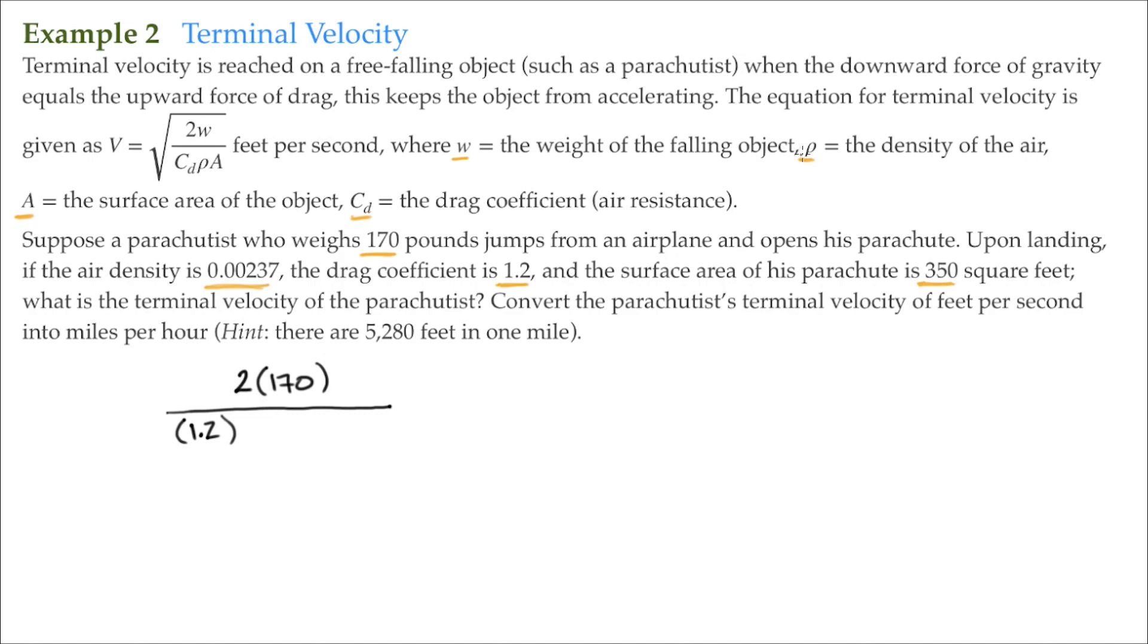That's rho, that's the density of the air. That's 0.00237, and then multiply that to the square feet of the parachute, which is 350, that's A.